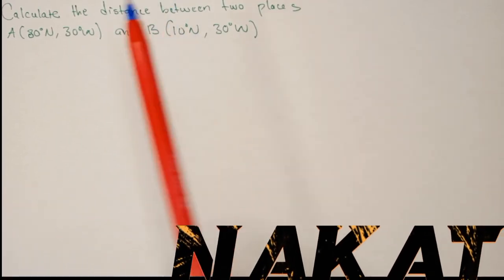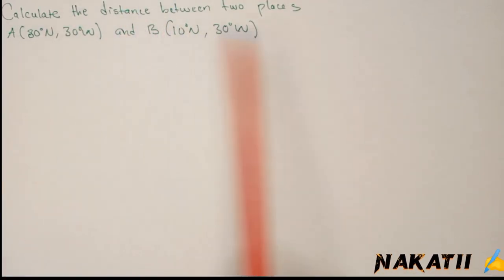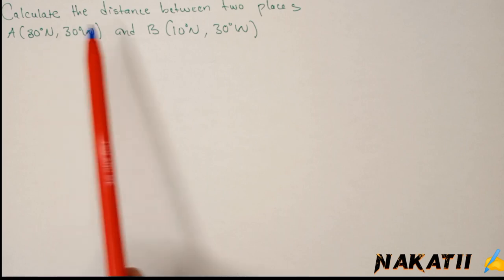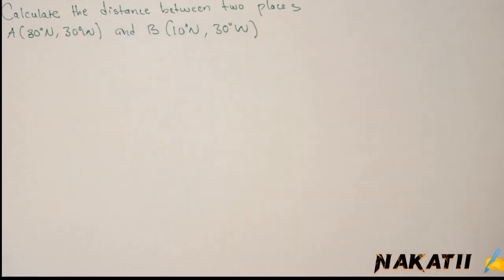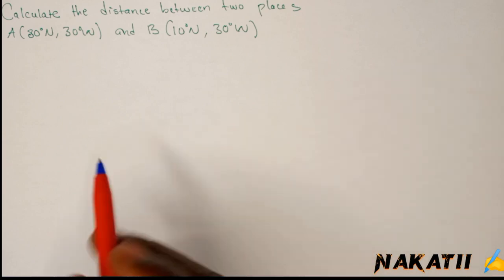We have a question here. It says calculate the distance between two places: A at 80 degrees north, 30 degrees west, and B at 10 degrees north, 30 degrees west. We can come up with a sketch to see where these two points are located on the earth's surface.